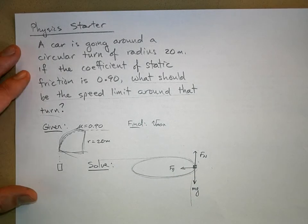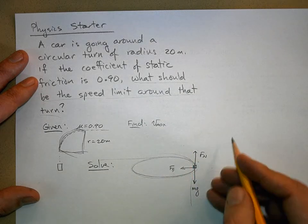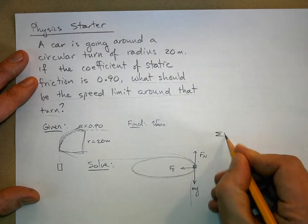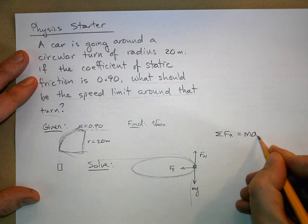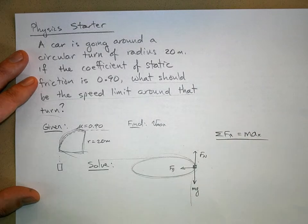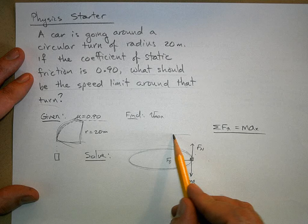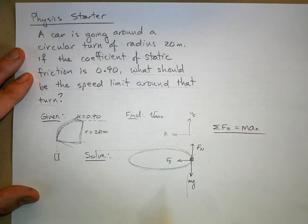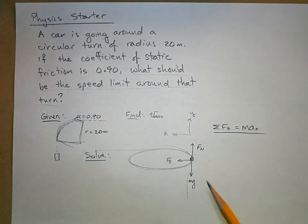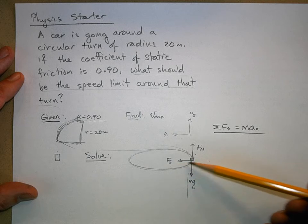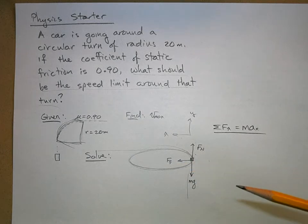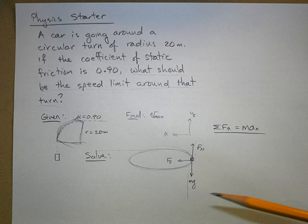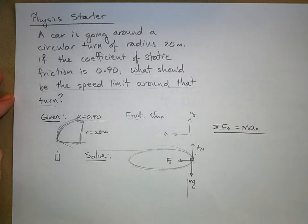This is the force of static friction, and if we want the maximum speed we want that maximum static friction. We're going around a turn so if we sum the forces in the x direction, that will equal ma in the x direction. We can make this the positive x and this the y.